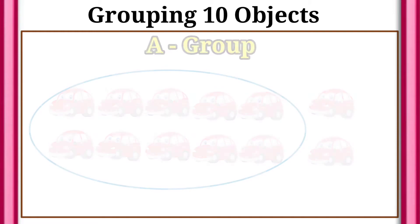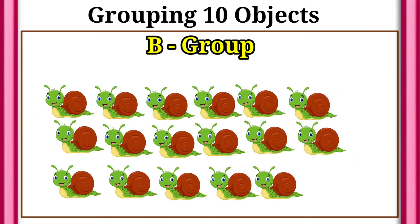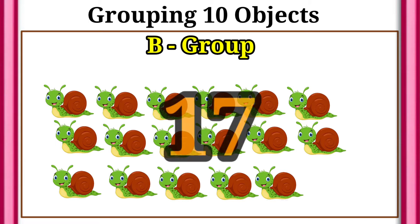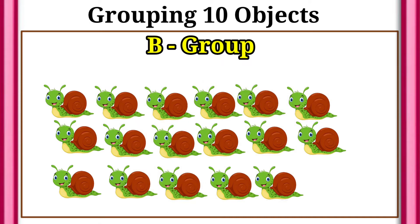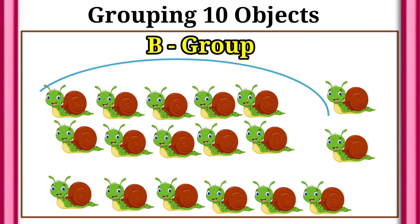Here we can see B set of objects. How many objects here? 17. Very good. We want only 10 objects, so let's circle 10 objects.